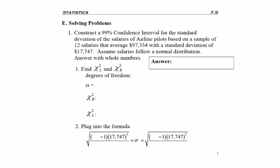So let's solve our first problem. Construct a 99% confidence interval for the standard deviation of salaries of airline pilots based on a sample of 12 salaries that averaged $97,334 with a standard deviation of $17,747. Assume salaries follow a normal distribution.